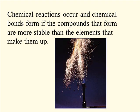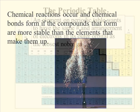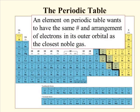The driving force for all chemical reactions and the formation of compounds is that the compounds are usually more stable than the elements that make them up. The periodic table shows us all of the elements, and most elements want to have the same number and arrangement of electrons in their outer orbitals as the noble gas closest to them on the periodic table.